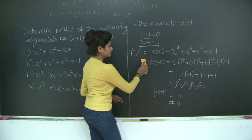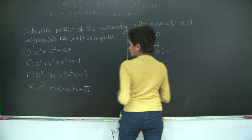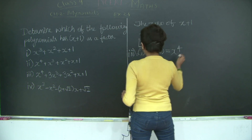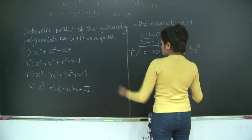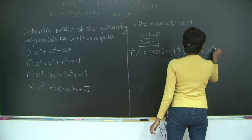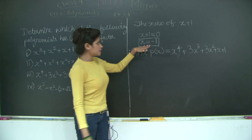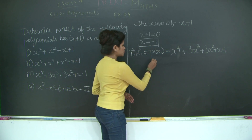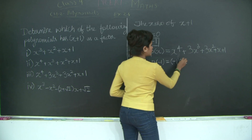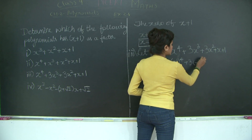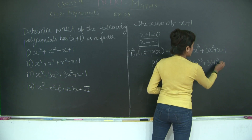Let's solve the third polynomial: x to the power 4 plus 3x cubed plus 3x squared plus x plus 1. Again, I am going to substitute x equals minus 1 into this polynomial.